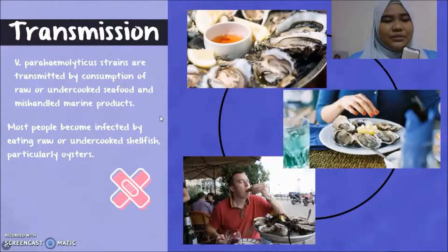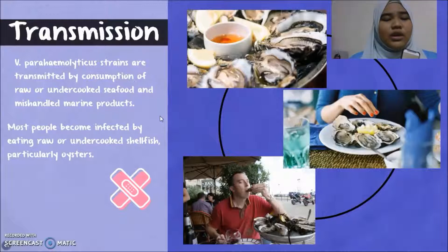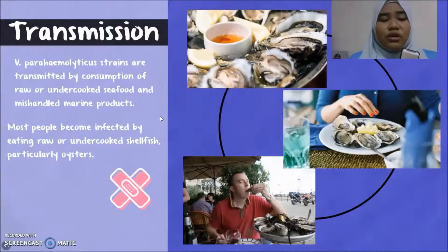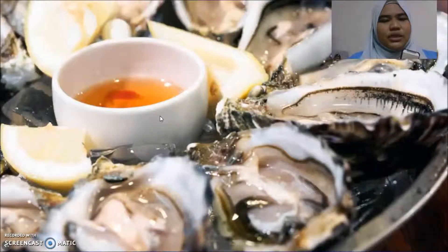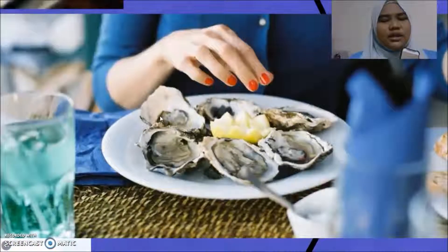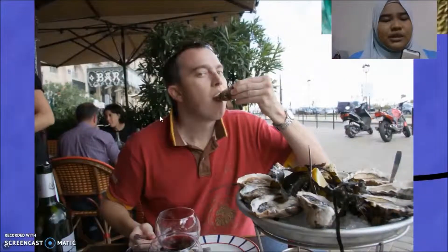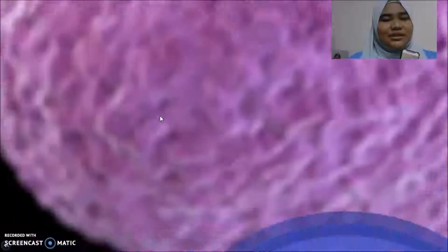And the transmission? Vibrio parahaemolyticus strains are transmitted by consumption of raw or undercooked seafood and mishandled marine products. Most people become infected by eating raw or undercooked shellfish, particularly oysters. Here is the oyster — the delicious oyster — eating raw oysters.